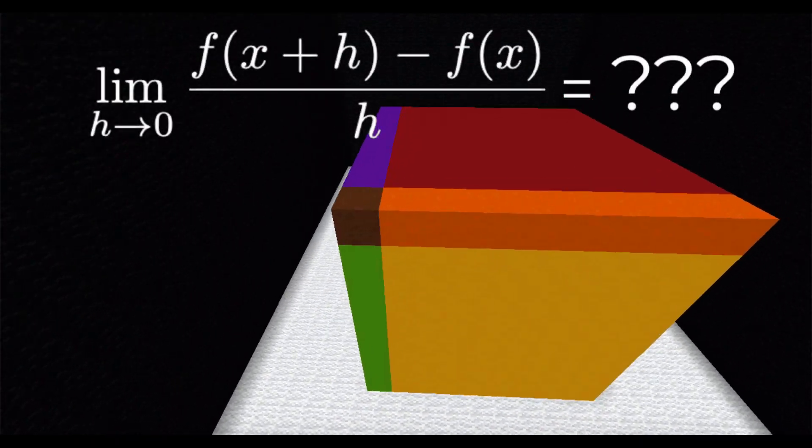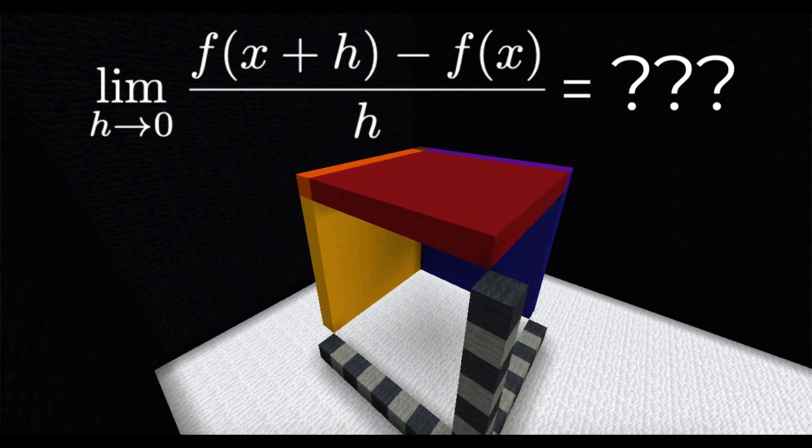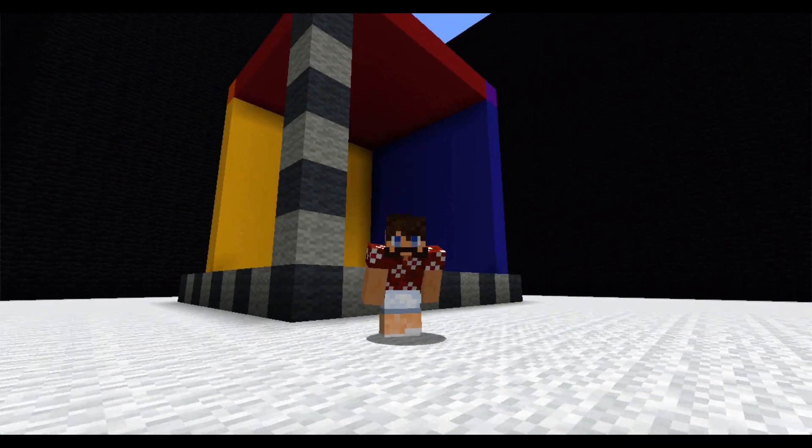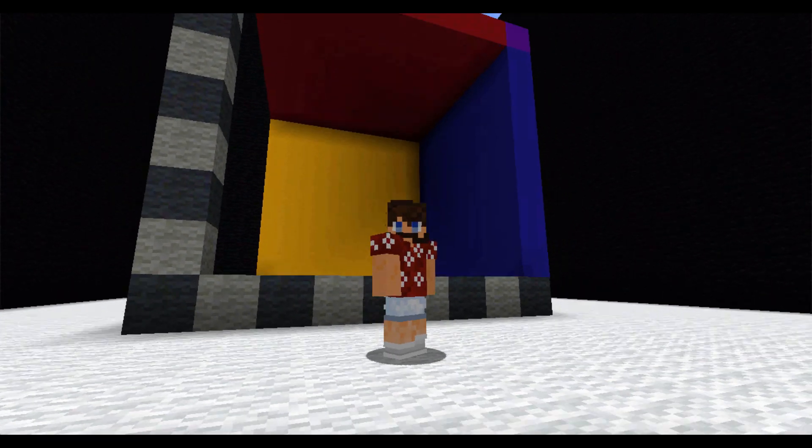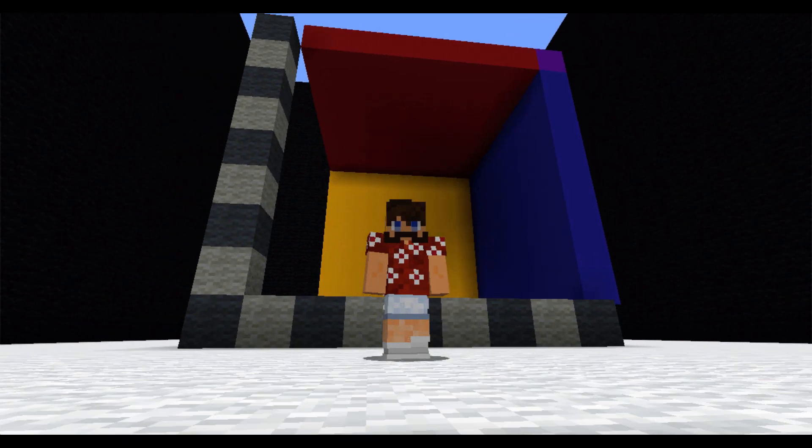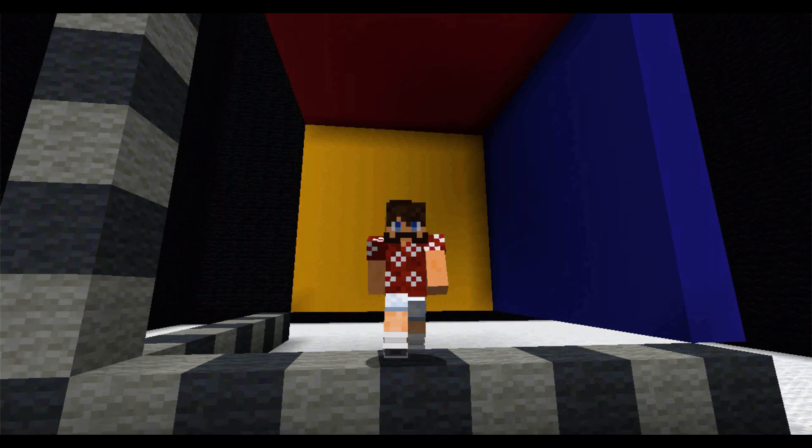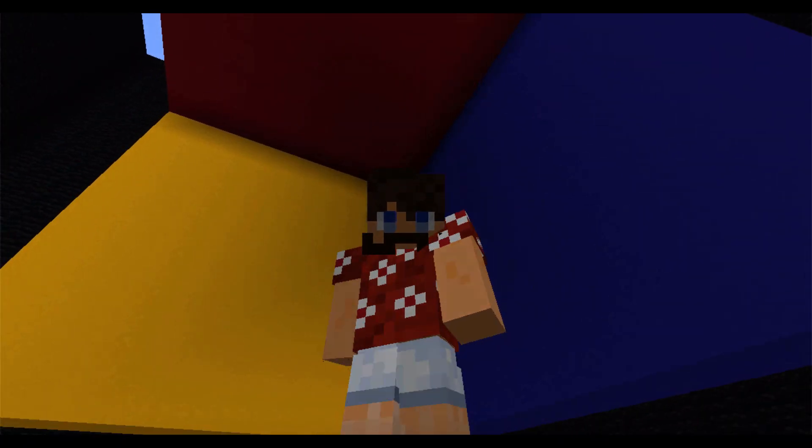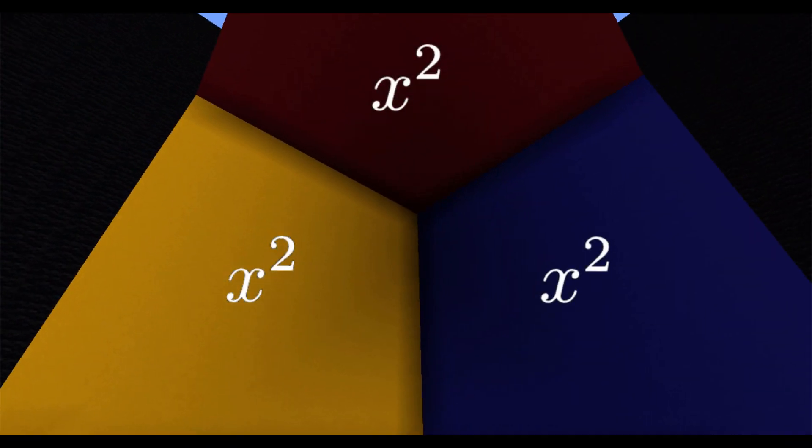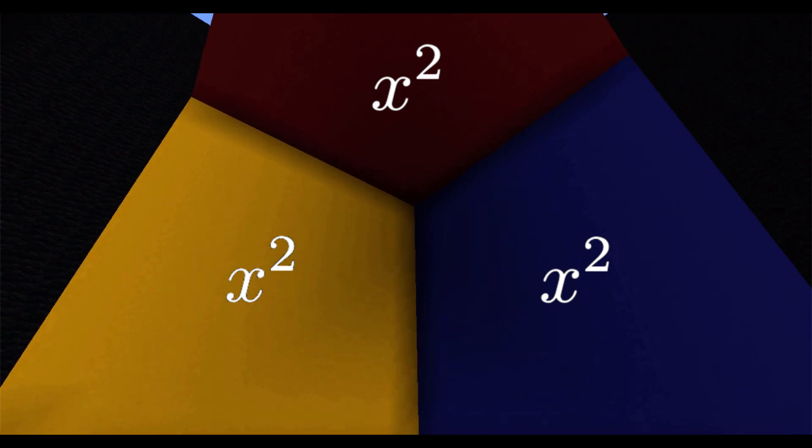And we want to evaluate the limit as h goes to 0 of this volume over h. And it turns out that the interior surface area of this shell is what you get when you divide by h and take the limit as h goes to 0. Since this surface is made up of three x by x squares, its surface area is 3x squared. So the derivative of x to the third is 3x squared.